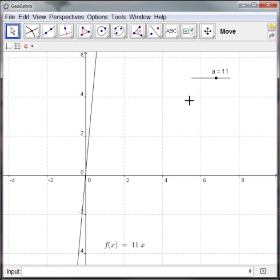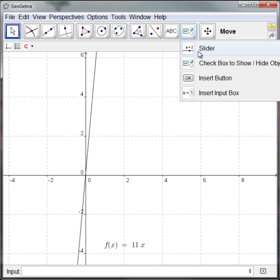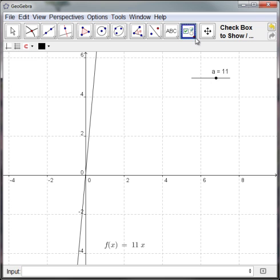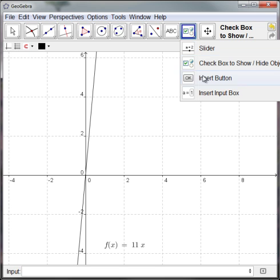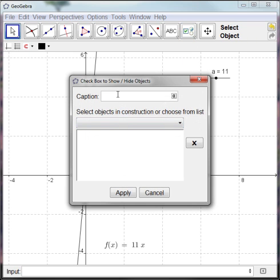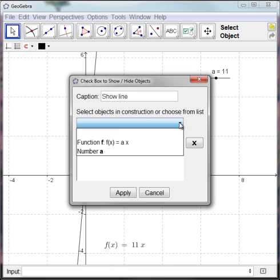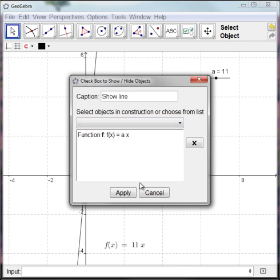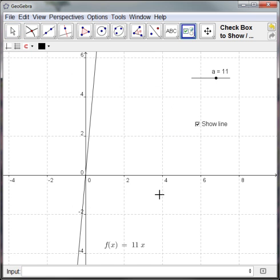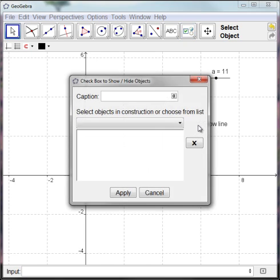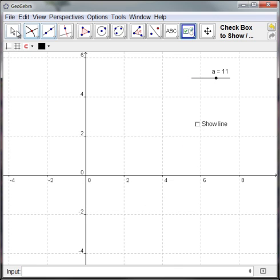So, you can also put in checkboxes to show objects or turn them on and off. We can go to checkboxes to show or hide object, click it. And I'm going to say show line as my title. And I want that to apply to that line. Now when I have to select my pointer tool first. So, when I click that, that line appears and disappears.